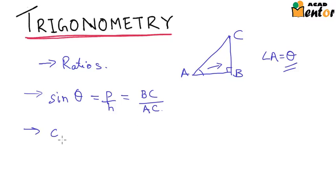The next ratio was cos theta. This was nothing but base by hypotenuse, base is the adjacent side, that is AB by the hypotenuse AC.